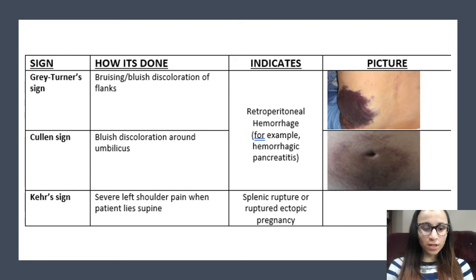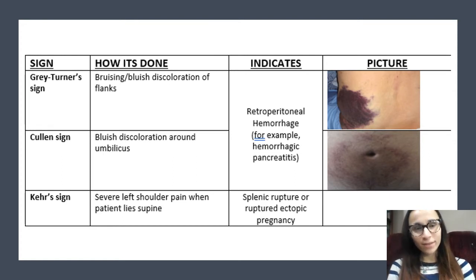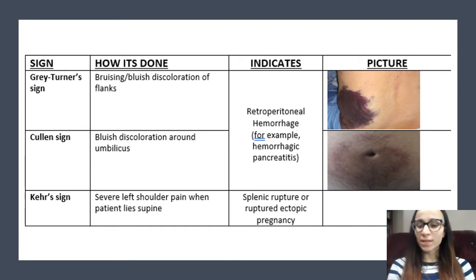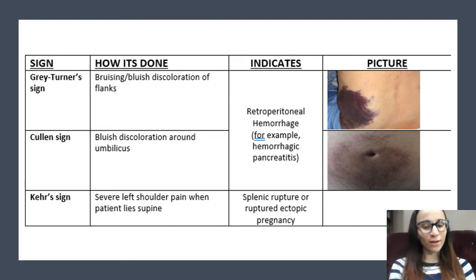The next one is Collins sign. It's also a bluish discoloration, but it's around the umbilicus. The way I like to remember this sign is that Collins is like 'culinary,' and people like to have pretty colors with culinary. So Gray-Turner is gray — a color — giving you a blue-purple discoloration on the flank. And Collins — so your 'color-y' — you have a blue discoloration on your umbilicus.